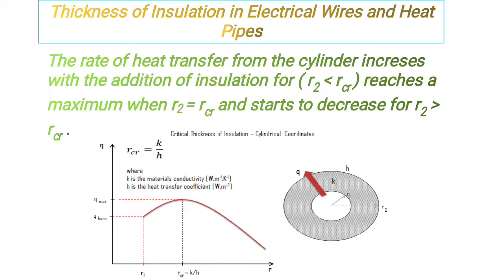R1 is fixed whereas R2 is variable. Here in this graph we see two parts. The first part, which is before the critical radius RCR, would be used in the case of electrical wires, and the other part would be used for insulating heat pipes.